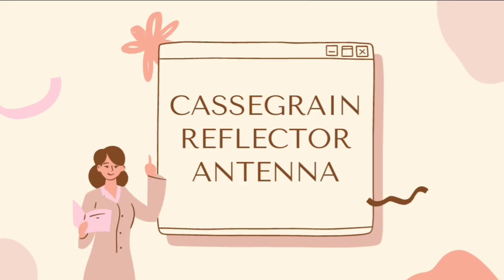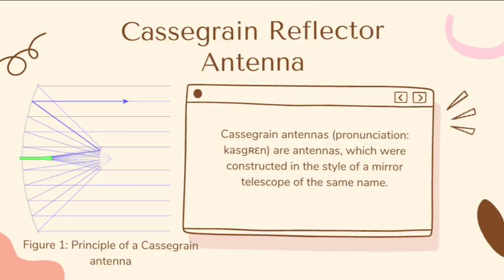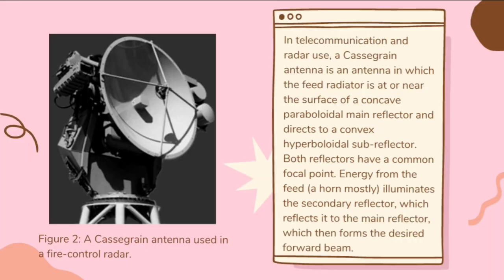Next is the Cassegrain reflector antenna. Cassegrain antennas are antennas which are constructed in the style of a mirror telescope of the same name. In telecommunication and radar use, a Cassegrain antenna is an antenna in which the fed radiator is at or near the surface of a concave paraboloidal main reflector and directs to a convex hyperboloidal subreflector. Both reflectors have a common focal point. Energy from the feed illuminates the secondary reflector, which reflects it to the main reflector, which then forms the desired forward beam.